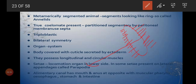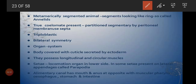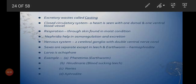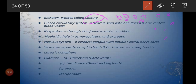The alimentary canal has a mouth and anus at opposite ends, with a muscular pharynx (which started from Aschelminthes), oesophagus, stomach, and intestine. The excretory waste is called castings or vermicast — small globular structures that are the excretory products of the Annelida group. When produced by earthworms specifically, we call it vermicasting.